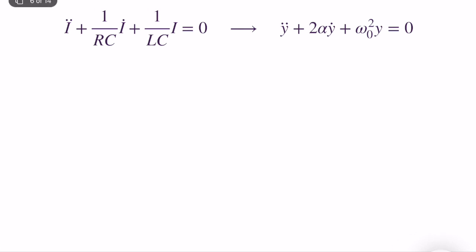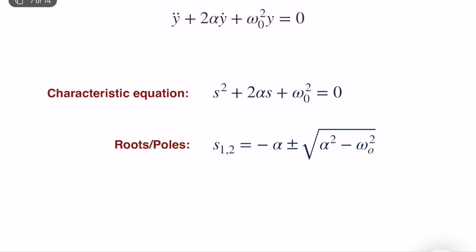To solve the ODE, we find the characteristic equation: S² + 2αS + ω₀² = 0. This is a second-order polynomial, since we have a second-order ODE. We obtain two poles: S₁,₂ = −α ± √(α² − ω₀²). Depending on the relationship between alpha and omega-naught, we have three different root characteristics.